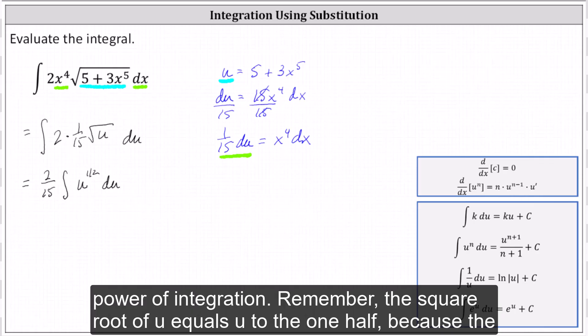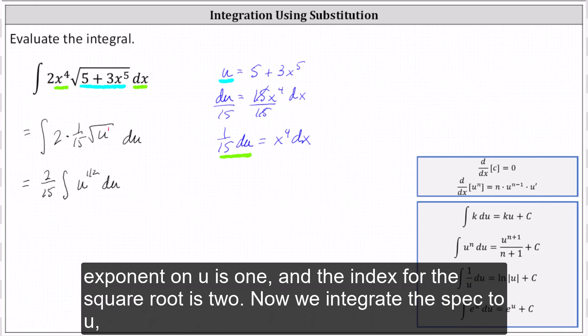Remember, the square root of u equals u to the 1/2 because the exponent on u is one and the index for the square root is two.